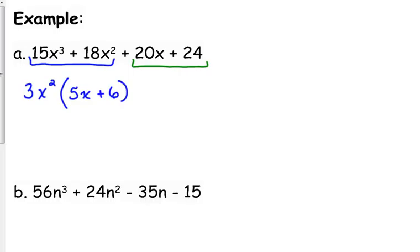That's our first group. Let's look at the second pair. 20x plus 24, what is their GCF? 20 and 24 have a GCF of positive 4. When we take out positive 4, what are we left with? 5x plus 6. Now notice, that binomial is common to both of these. That is what's supposed to happen. That's what's supposed to happen.